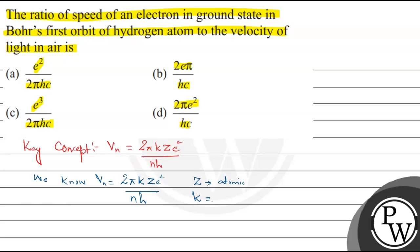Where k is equal to 9×10⁹, e is the charge of an electron, n is the number of orbit, and h is Planck's constant.